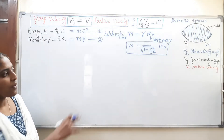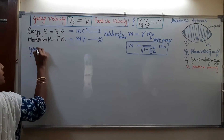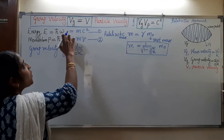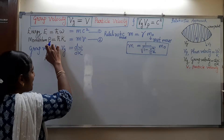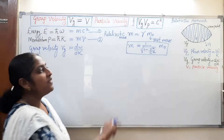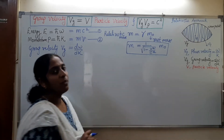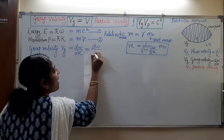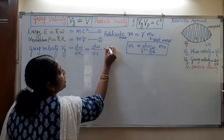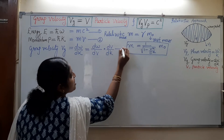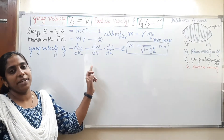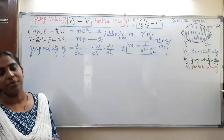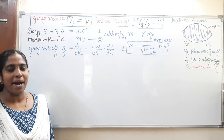Now, the group velocity is equal to d omega by dk. In this expression, omega and k are closely related with energy and momentum respectively, both of which vary with the particle speed v. So using the chain rule we can write d omega by dk as d omega by dv times dv by dk. This is Equation 3. We can separately find d omega by dv and dv by dk, and from these determine the relationship between group velocity and particle velocity.